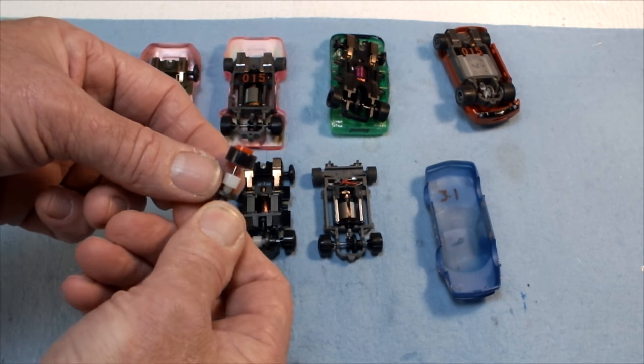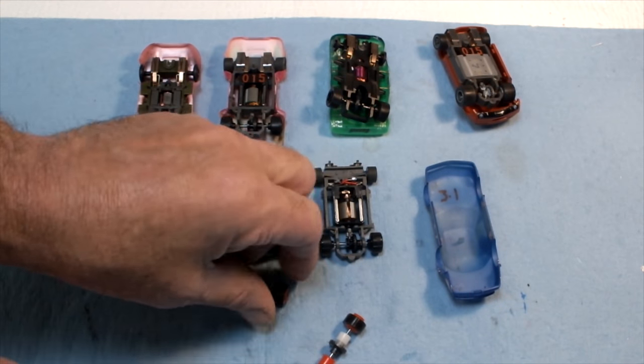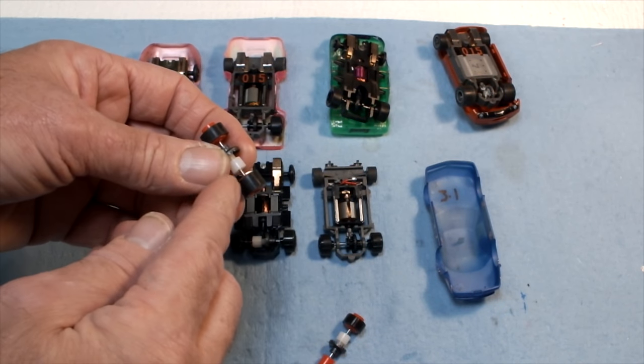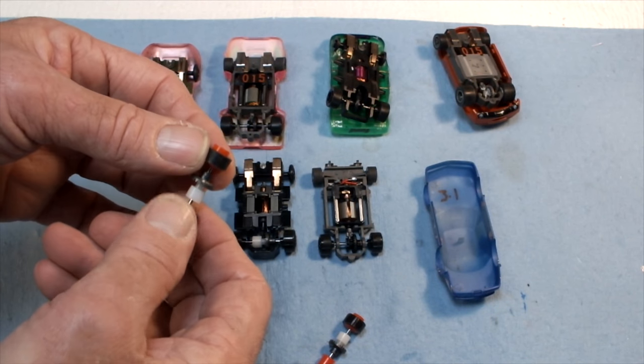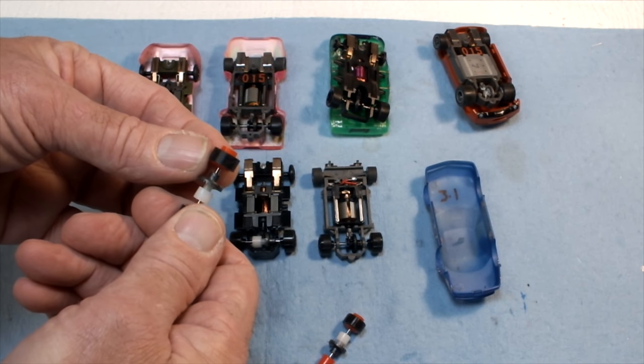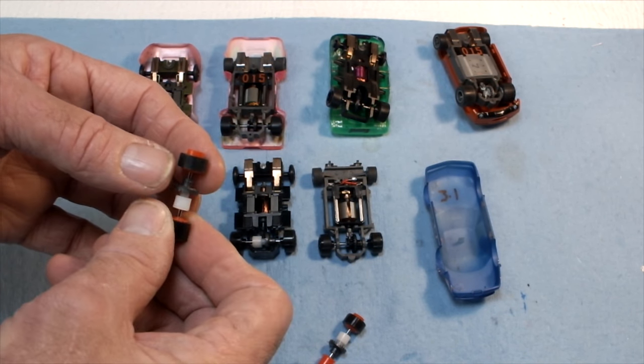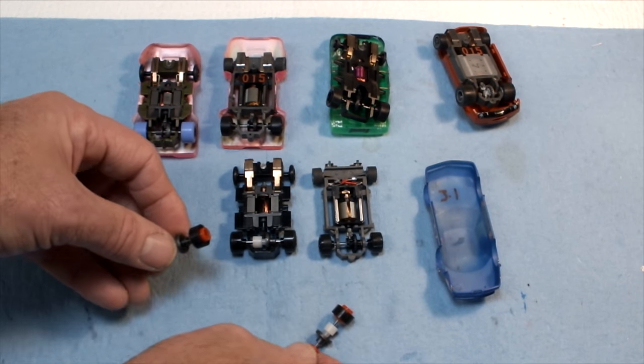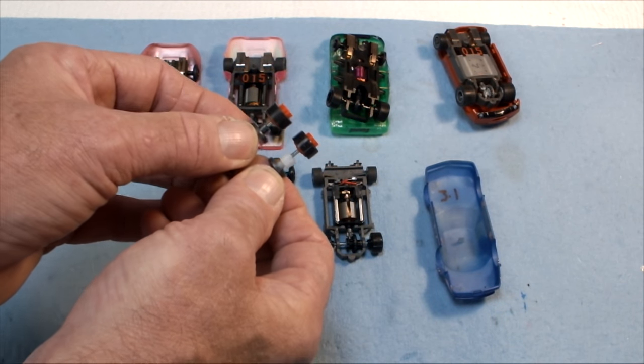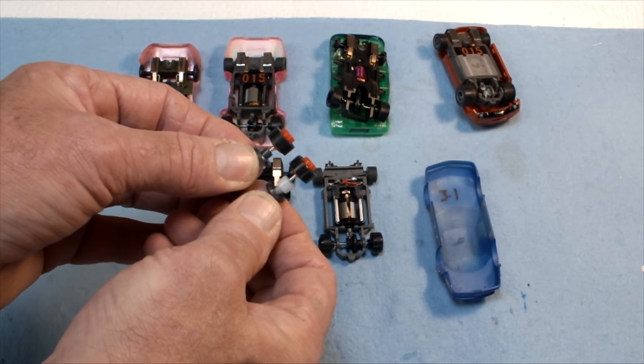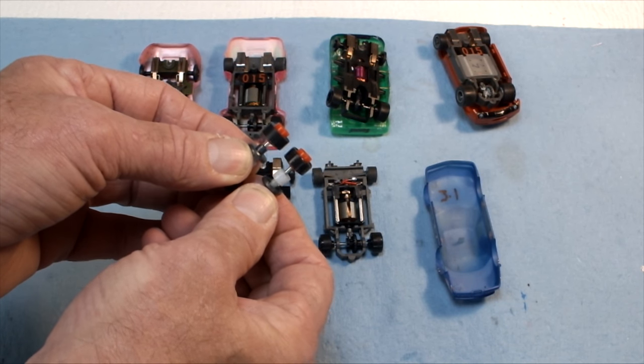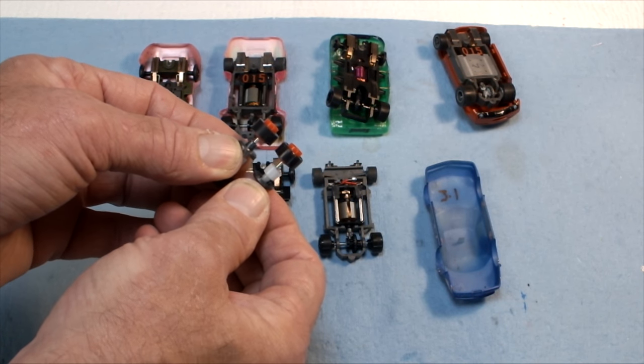The Viper product line has a tire called a PST and I have it on a Tyco rim here just to show you the difference, how much narrower it is. And then on this particular rim you have a standard Super Tire, and then there is a new product out from Super Tires that's .200 wide. So you can see that both the Viper PST and the new Super Tire .200 are designed for your more modern applications.